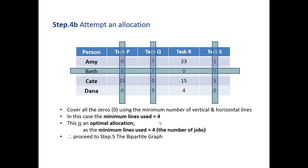Let's try an allocation again, and this time it does require 1, 2, 3, and 4 lines, be them either vertical or horizontal, to cover all the zeros. So this is called an optimal allocation. The number of lines used is equal to the number of jobs, four lines for four jobs. So we've performed an allocation.